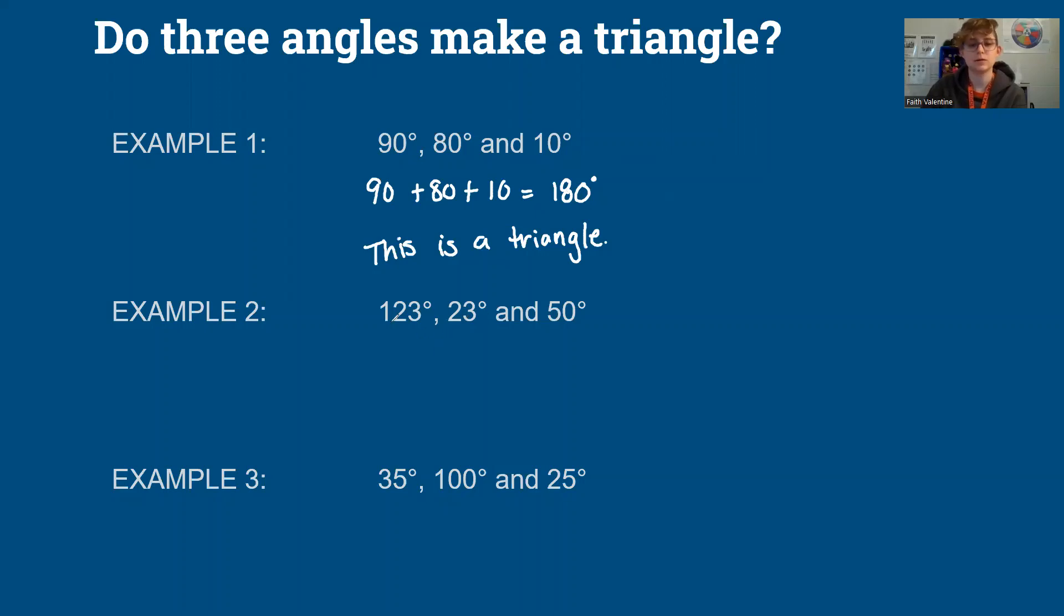And let's look at our next one. So 123 plus 23 plus 50. So I'm going to add my ones place first. 3 plus 3 is 6, 6 plus 0 is still 6. And already you might be like, nah, that's not a triangle. How do we know? Well, I have to equal 180. This is going to equal something ending in a 6. But we can keep adding and just confirm. 2 plus 2 is 4, 4 plus 5 is 9. Our 1 doesn't add to anything. So this does equal 196. It's not 180, so this is not a triangle.